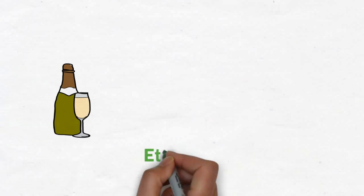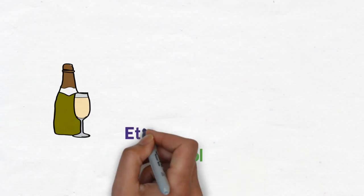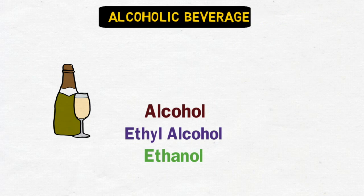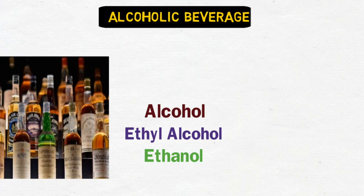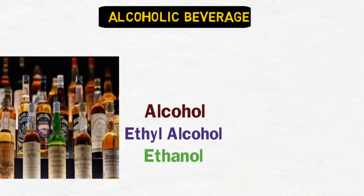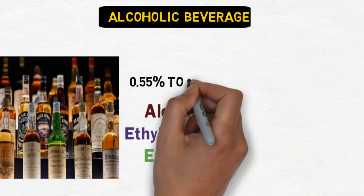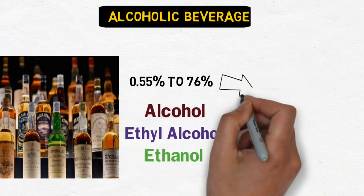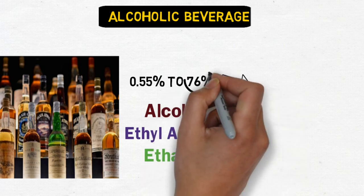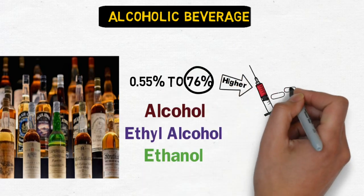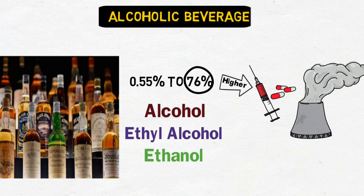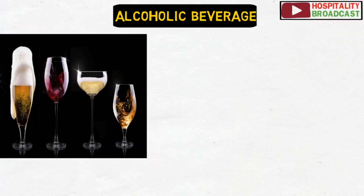Any drink containing ethanol or ethyl alcohol is called an alcoholic beverage. Most portable alcoholic drinks like beer, vodka, wine, and brandy contain 0.55 to 76 percent alcohol by volume. Beverages containing higher than 76 percent alcohol are used for medical or industrial purposes, which we are not going to discuss today.